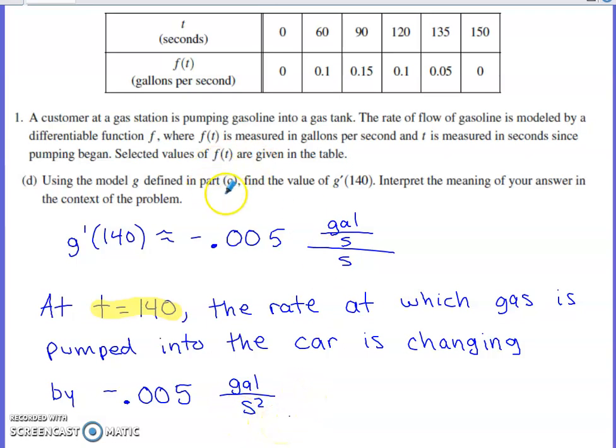A lot of the time they do ask for units in a problem like this. So I went ahead and included them in a couple of places. My last comment about this problem would be one mistake that I see made fairly often with interpretations like this. You wouldn't want to say the rate at which gas is pumped into the car is decreasing by a negative. If you use the word decreasing and then you also attach a negative to your calculation, you've double negatived yourself and that's going to be an issue.